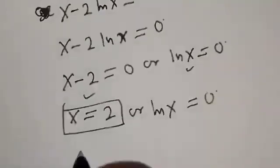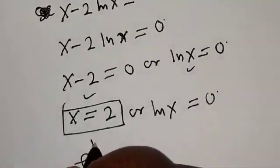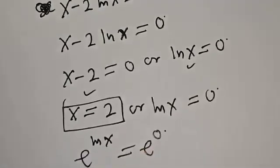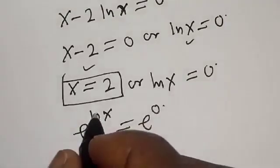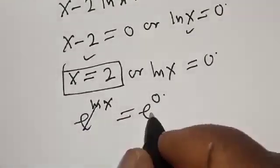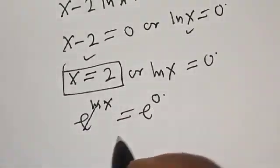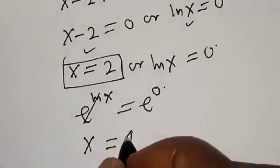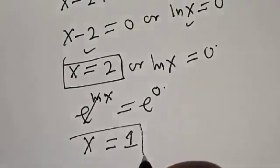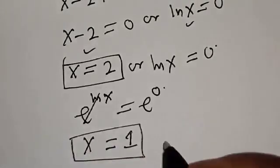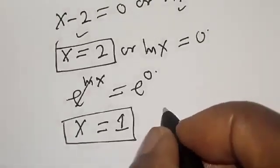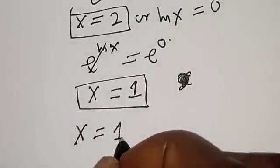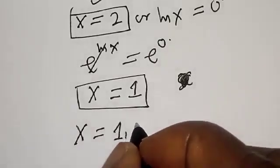From the second case, natural log of s equals zero, we raise e to both sides: e raised to power natural log of s is equal to e raised to power zero, giving s is equal to one. That is the second value of s. Therefore our answers are s is equal to one or two.